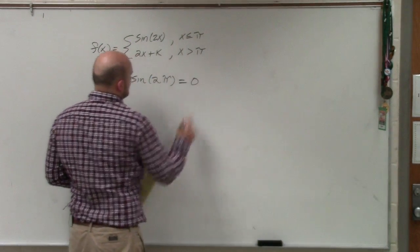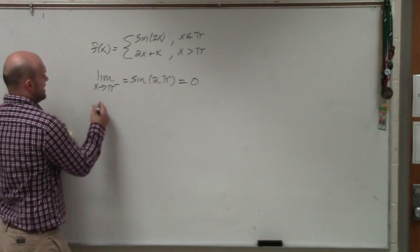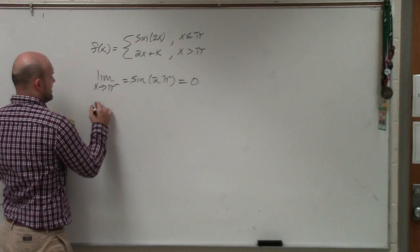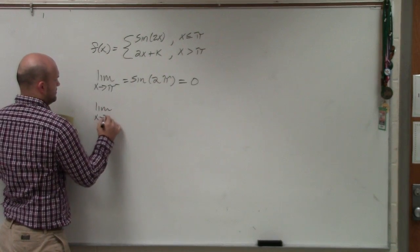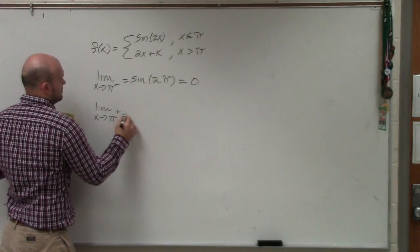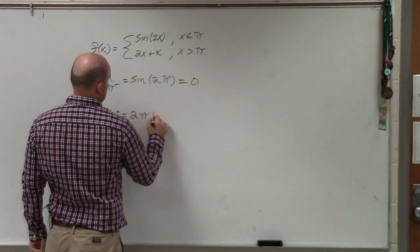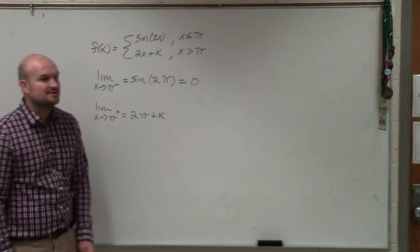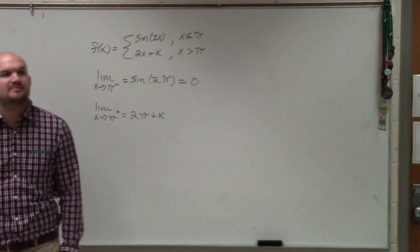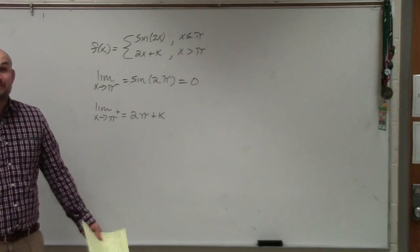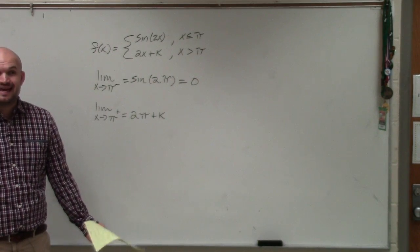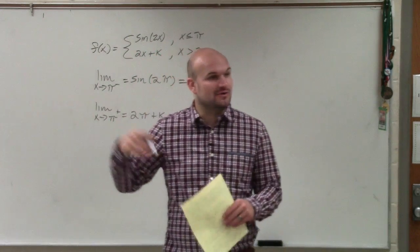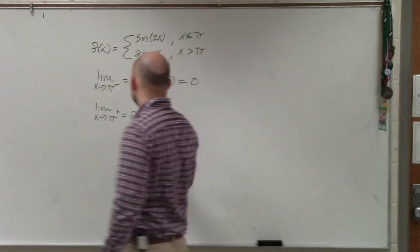Then we have to evaluate the right hand limit. Now we can't really do anything from this because we have a variable and 2π is going to be some number. However, for this to be a continuous function, what did I say had to exist? The left hand side has to equal the right hand side.